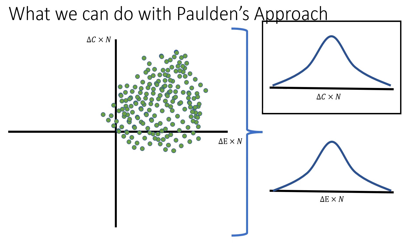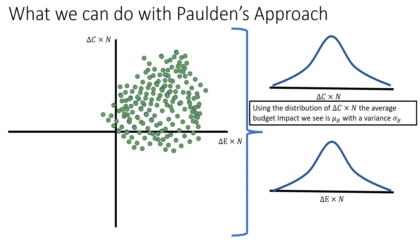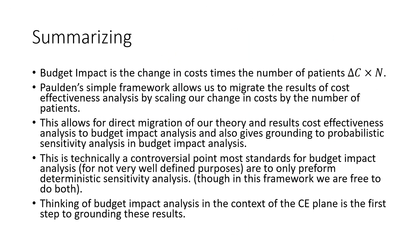This distribution of total change in costs is what defines our budget impact. Using this distribution of change in costs times the total number of patients in our target population, the average budget impact we'll see is mu_b with a variance of sigma_b squared. To summarize: budget impact analysis is just the change in costs times the number of patients. Paulden's framework allows us to migrate the results of cost effectiveness analysis by scaling the change in costs by the total number of patients in the target population, also giving grounding to probabilistic sensitivity analysis in budget impact analysis.